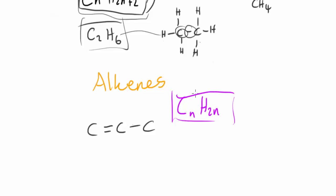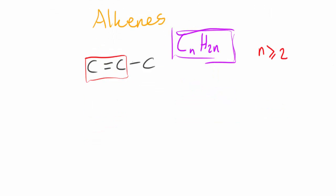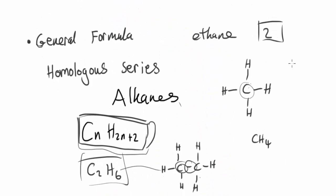So CₙH₂ₙ is the general formula for alkenes. Another part of this rule is that N has to be greater than or equal to 2 — you can deduce why, because there has to be a double bond, and if there's only one carbon you can't have a carbon-carbon double bond. So if I draw out the simplest alkene, ethene, N is 2, so we have 2 carbons and 4 hydrogens. That's the basic concept of general formulas and homologous series.